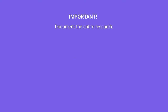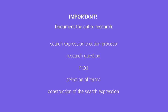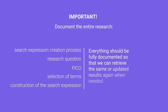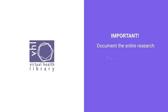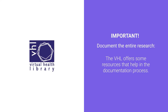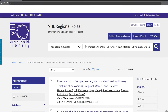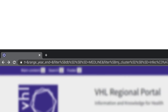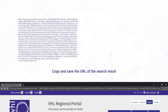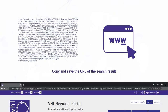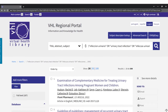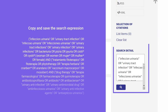It is important to document the entire research process, from the search expression creation, research question, PICO, the selection of terms, and construction of the search expression. Everything should be fully documented so that we can retrieve the same or updated results again when needed. The VHL offers resources that help in the documentation process. The first and simplest is to use the result URL, where the entire search expression is stored. By saving the URL and applying it again in a browser, you will get results that are always up to date. You can also copy and save the search expression from the search detail box.